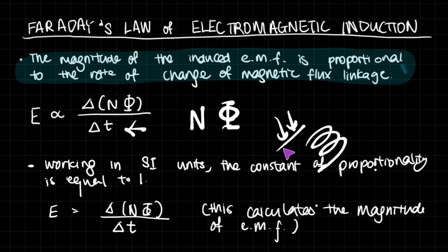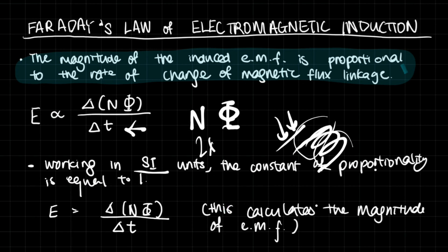So if you don't have one single wire but a coil, you have to count how many turns you have — one, two — so you would get two times whatever your phi value is. If you work in SI units, the constant of proportionality equals one, which means you can just equate those two together. This calculates the magnitude of EMF. If you want to calculate the direction of the EMF, you will have to look at Lenz's law, which I will explain later in this video.